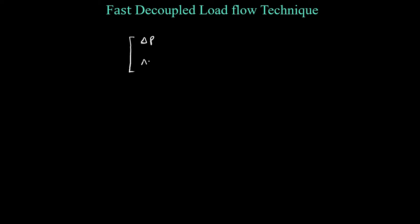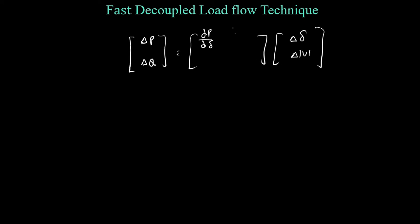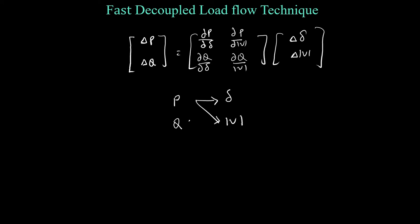In the Newton-Raphson method, we have the relation delta P and delta Q with respect to delta-del and delta-mod-V. Based on that, we have ∂P/∂δ, ∂P/∂|V|, ∂Q/∂δ, and ∂Q/∂|V|. In Newton-Raphson, we check whether there are real power changes with respect to phase angle or voltage magnitude, and similarly the effects of reactive power with respect to phase angle and voltage magnitude.